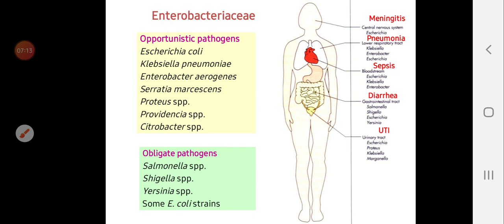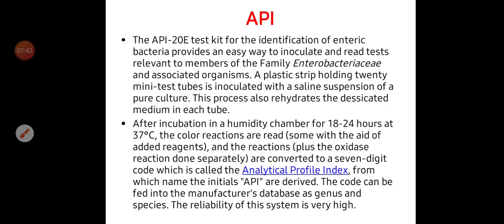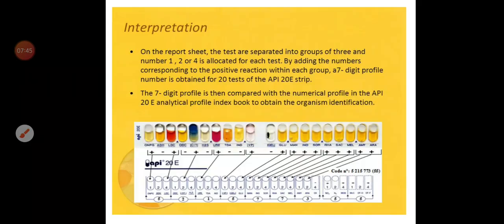We have now reached the end of Enterobacteriaceae. These are the diseases caused by members of Enterobacteriaceae; we have opportunistic pathogens and primary obligate pathogens such as Salmonella, Shigella, Yersinia, and some E. coli strains. We also have the API — Analytical Profile Index — which is a tool used for differentiation between members of Enterobacteriaceae. API 20E is specific for Enterobacteriaceae and was discussed briefly in the previous lecture.